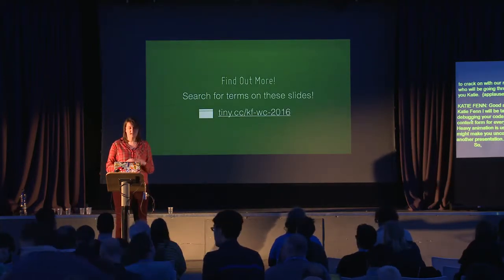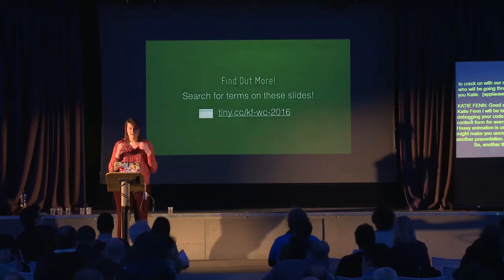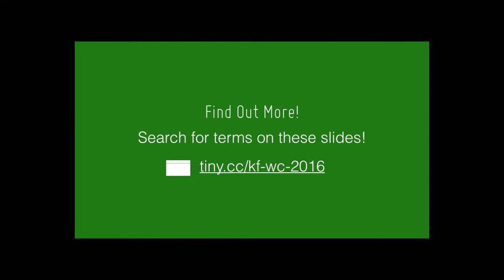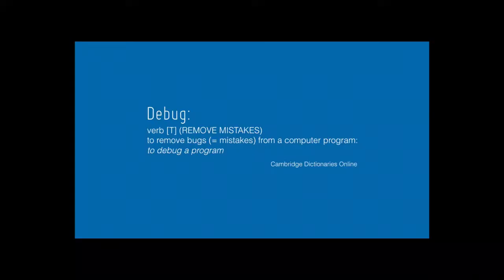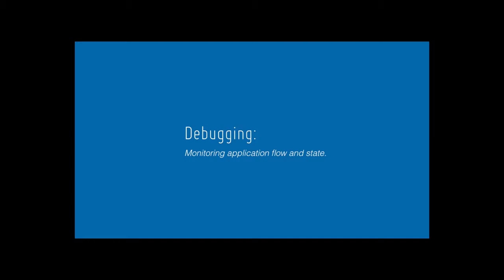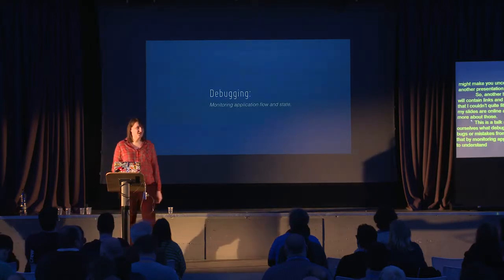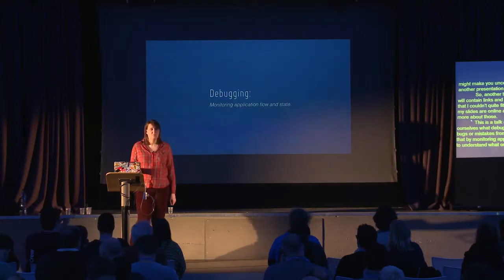Green slides in my talk will contain links and Google terms to other features that I couldn't quite fit in. If you want to follow along, my slides are online at this address. This is a talk about debugging — it means to remove bugs or mistakes from a computer program. We do that by monitoring application flow and state. We have to understand what our sites are doing before we can understand what they're doing wrong.